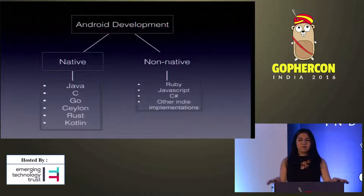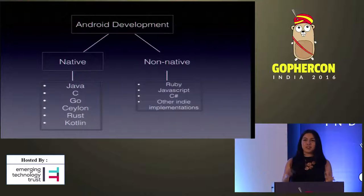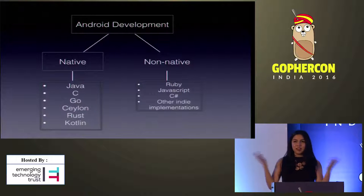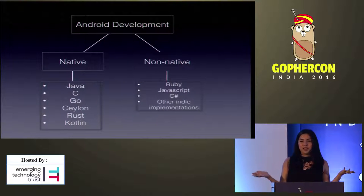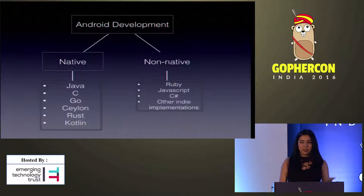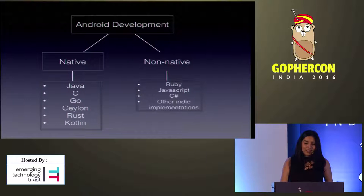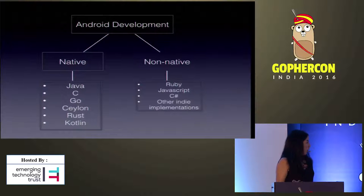Suddenly, every single framework or language became available for Android development. In just a couple of years, we have native Android development not only with Java and C, but also with Go, Ceylon, Rust, and Kotlin. The non-native environment is still the same. So why use Go and not Ceylon, Rust, Kotlin, or any other language you already like for native development?